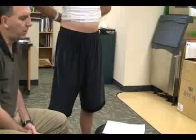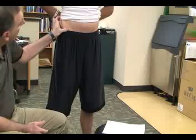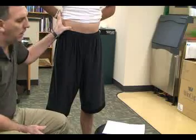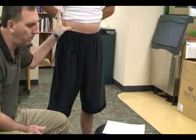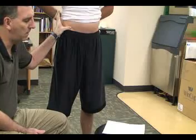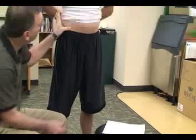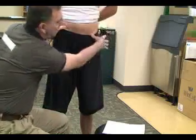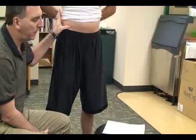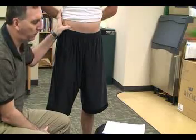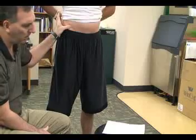The anterior bony structures we're going to palpate first — the first is going to be the anterior superior iliac spine, or ASIS. You can palpate with both thumbs if you wanted to. These structures may be difficult to find but should be right on the top of the waistline.